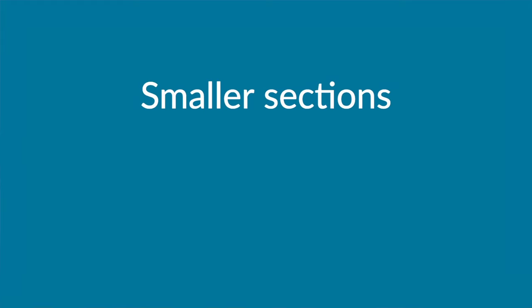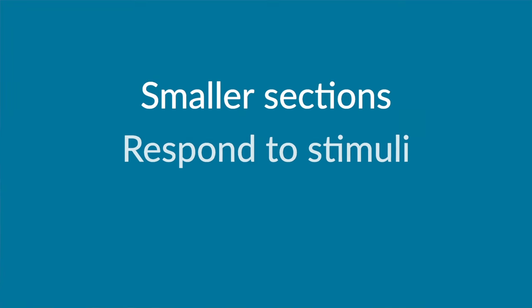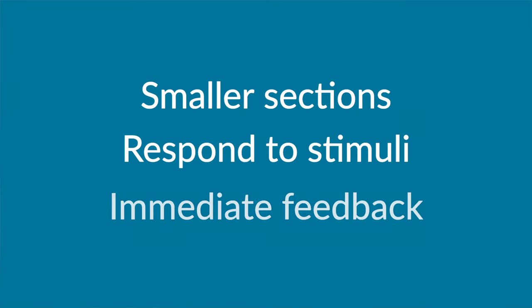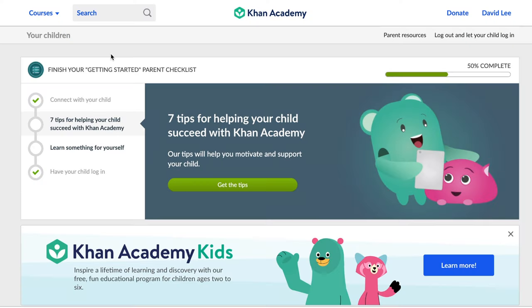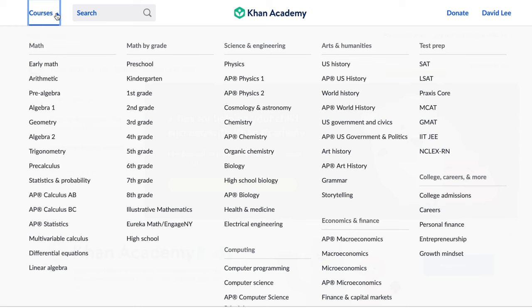Behaviorism-based tech is very popular in edtech because it helps students increase their performance in tests. For example, apps and other online platforms break down learning into smaller sections, each section requiring students to respond to stimuli and then getting immediate feedback. Let's take a look at Khan Academy, an example of behaviorism-based tech.